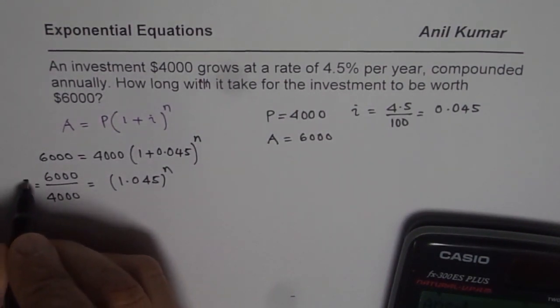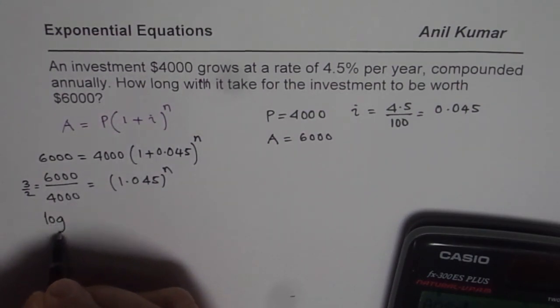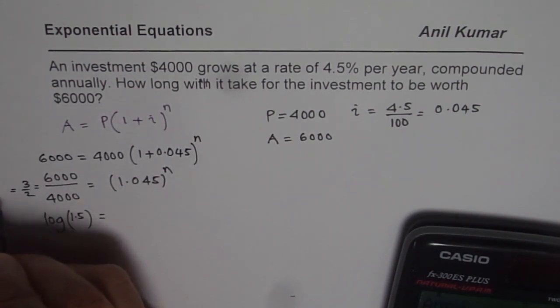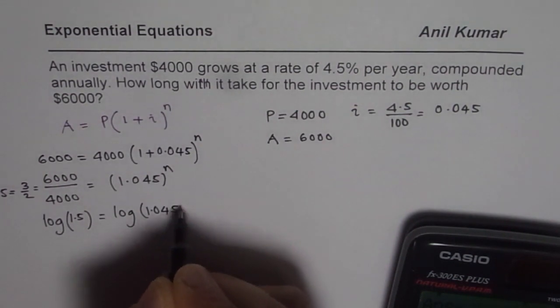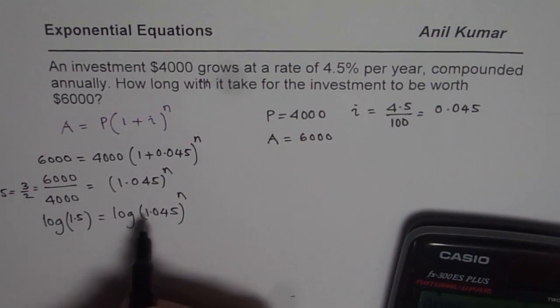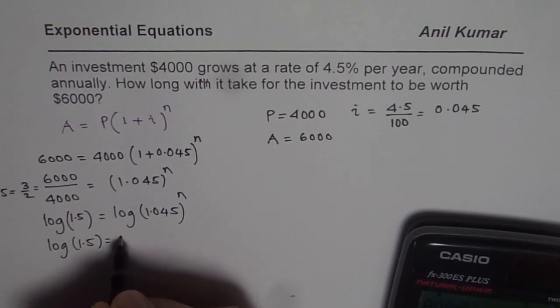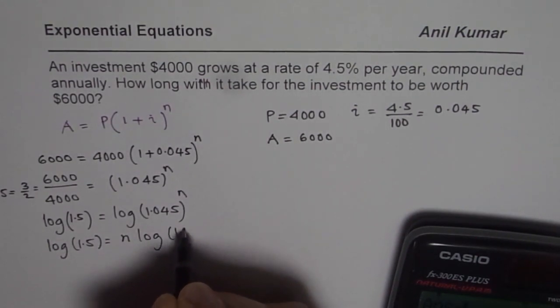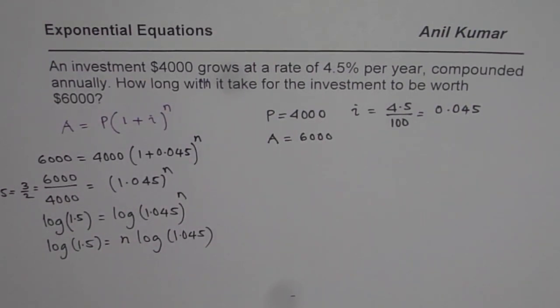Let's take log on both sides to solve. So we get log(3/2) or log(1.5) equals - let me write this as 1.5 - log(1.045). I converted to decimal since we already have decimals. Applying power rule we could write this as log(1.5) equals n times log(1.045). Now this power rule really helps us to rewrite the equation so that we can isolate n.